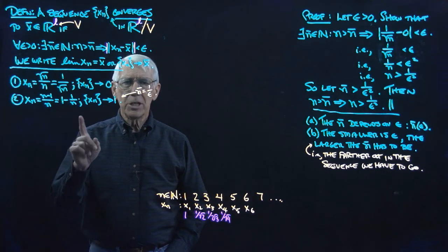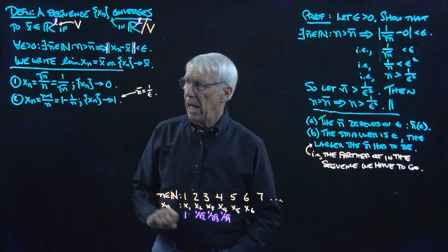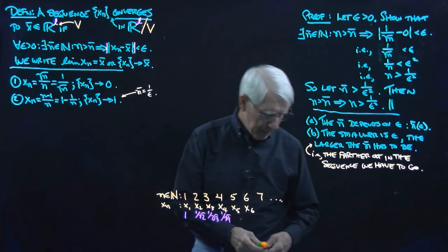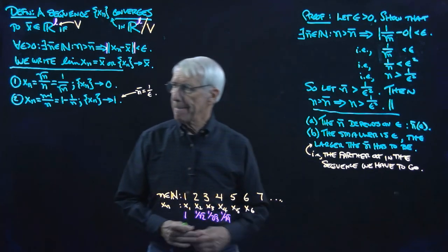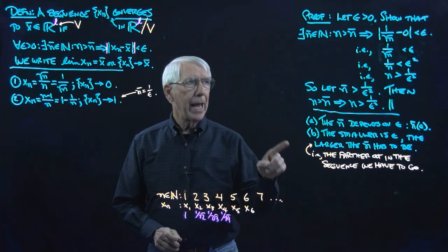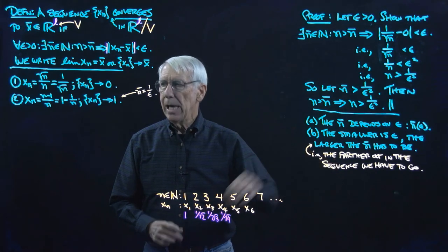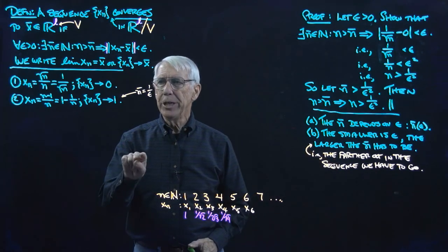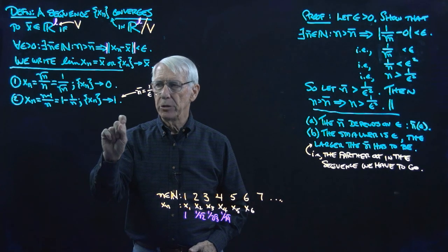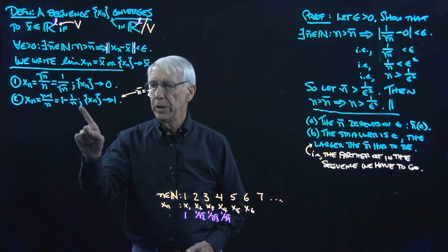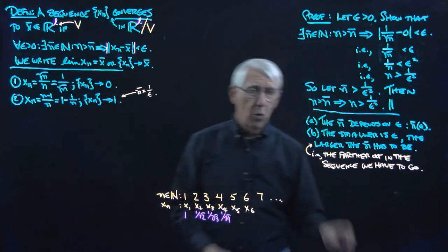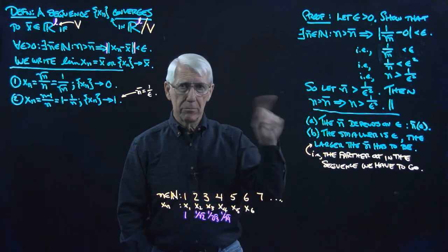But notice: instead of proving this directly, I could prove this in a different way. For that, I'm going to take this off and we'll use this space again to see our first theorem about convergence of sequences. And we'll use that as a way to prove that this sequence converges to 1. So we'll take this off and be right back.